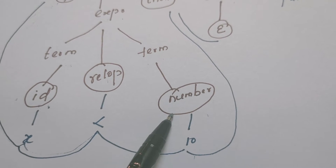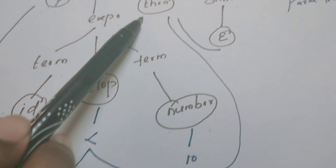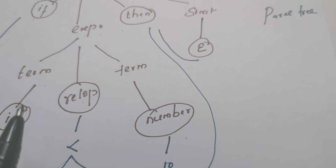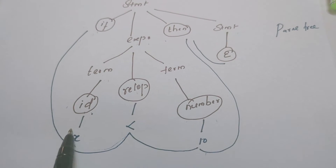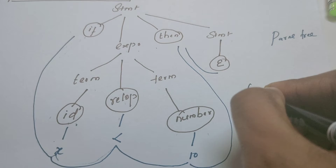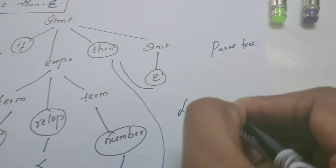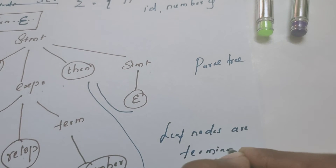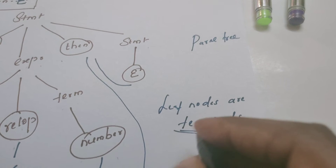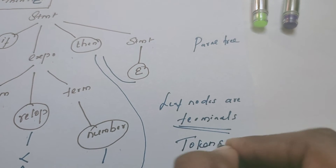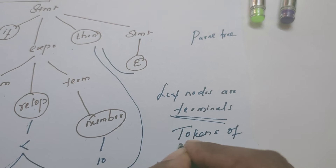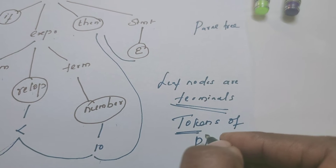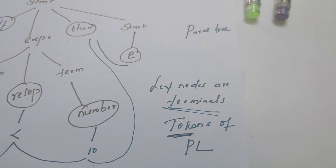Number is a leaf node — number is also a token. 'then' is a keyword, and a keyword is also a token. So the conclusion is: the leaf nodes of the parse tree are terminals, and all these terminals are nothing but the tokens of the programming language — keywords, identifiers, operators, strings, and numbers are all tokens.